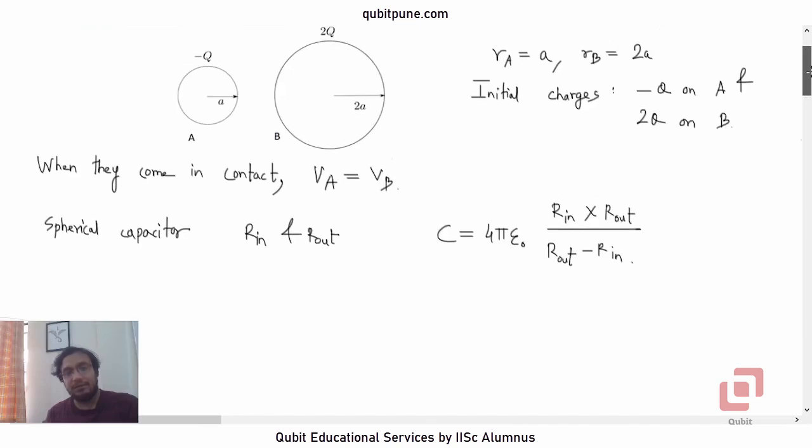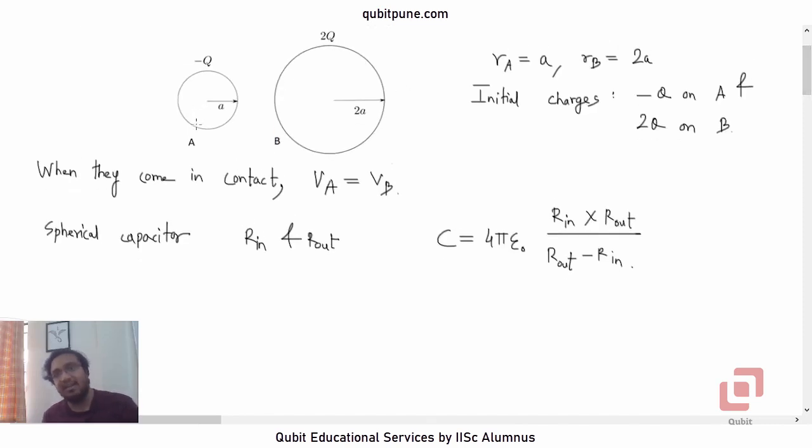Now suppose we wish to treat the conductor A itself as a spherical capacitor. We have to imagine that its shell or the radius of its shell is infinite. Which shell? The outer shell. So if Rout tends to infinity, then what will be the expression for C?